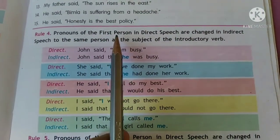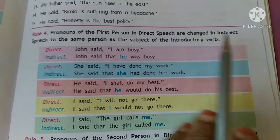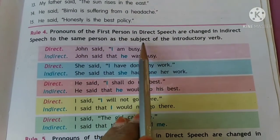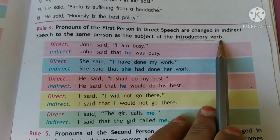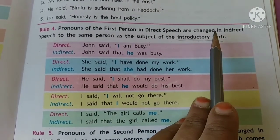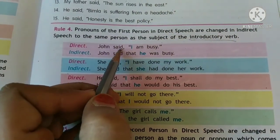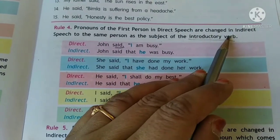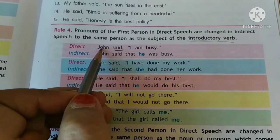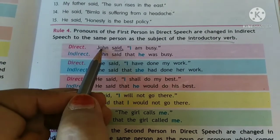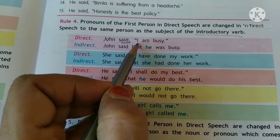Rule 4: pronouns of the first person in direct speech are changed in indirect speech to the same person as the subject of the introductory verb. This introductory verb is your reported verb. So here the reported verb is 'said', and the subject of the introductory verb is John. John in the direct speech is saying — John said, 'I am busy.'